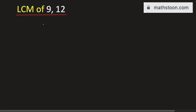In this video, we will find the LCM of 9 and 12. We will use the division method. So let us try to divide these numbers by prime numbers. We will start from the smallest prime number, which is 2.